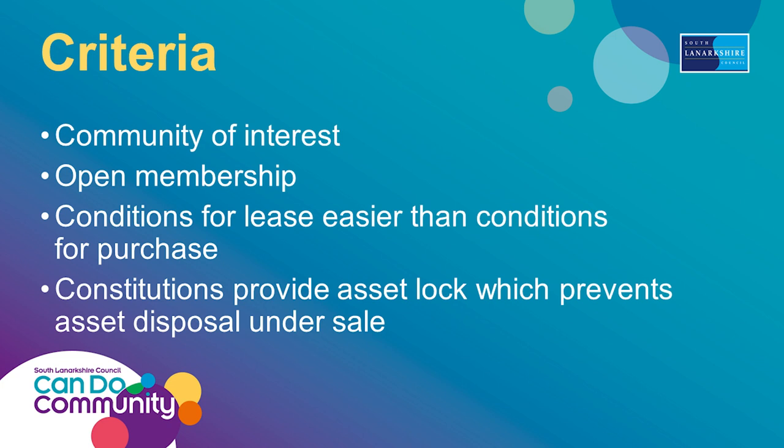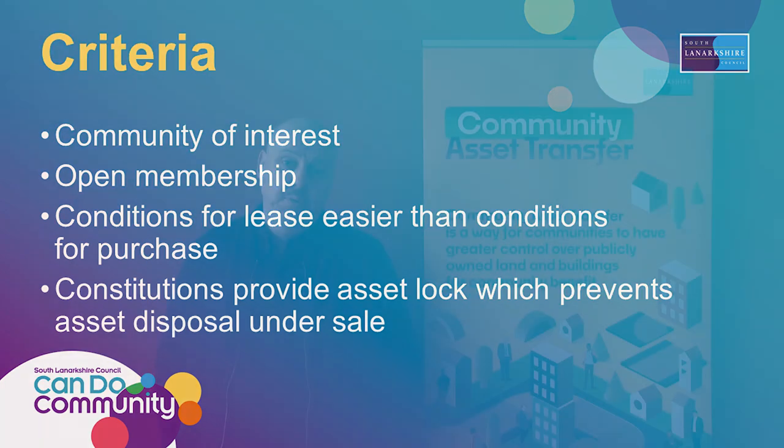We also require that the constitution has an asset lock. Most charitable organisations have this, and what this means is if we lease or sell the property to you, you are unable to sell this property on commercially. It must be disposed of to another suitable charity if your organisation comes to an end. This is important to ensure that the public served by the authority are receiving the best benefit from property or land.